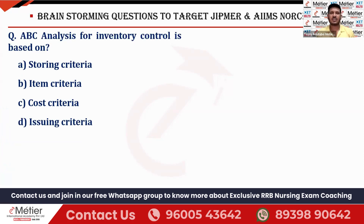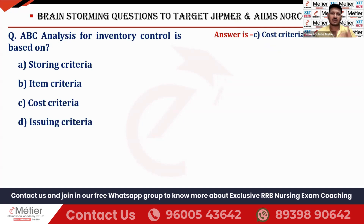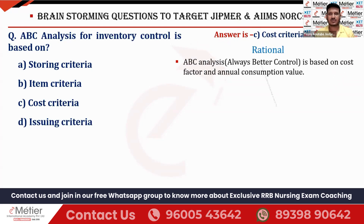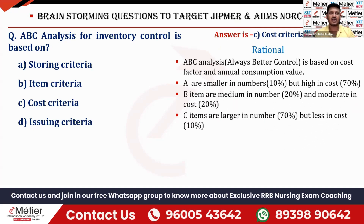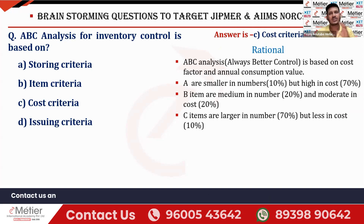Always keep in mind — ABC Analysis means two things. The first key point is cost criteria. The second one is annual consumption. ABC Analysis of Inventory Control is functioning based upon these two only. This point has to be kept in your mind.